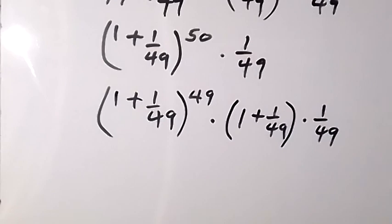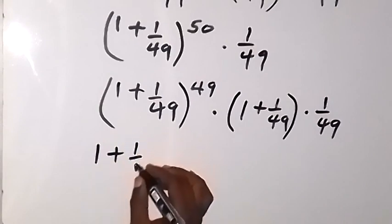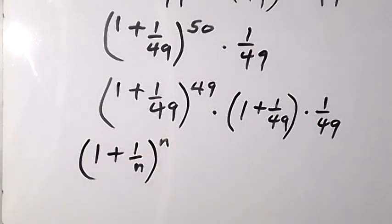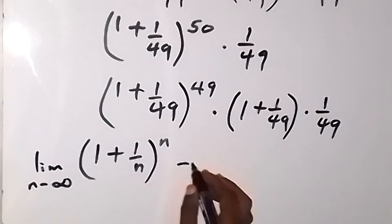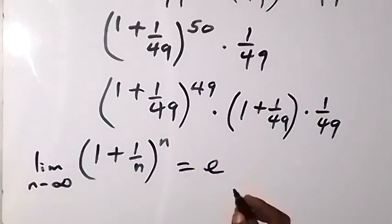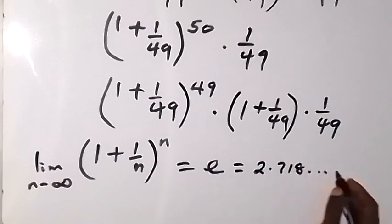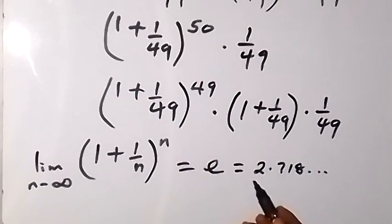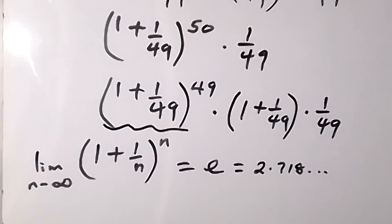From here I can see that something unique appears. We have something in the form of 1 plus 1 over n raised to the power of n. This expression has the limit as n tends to infinity equal to e, whereby this e is a number which is less than 3. We have e equals 2.718 and so on — it is an irrational number, and obviously we see that it is less than 3.